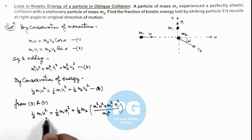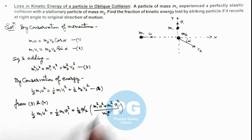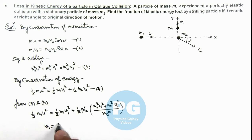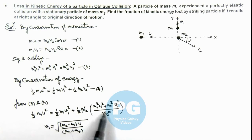On simplifying, m2 cancels out and we get the value of v1. The value of v1 we are getting is: v1 = sqrt((m2 - m1)/(m1 + m2)) * u. I'm leaving it for you to simplify this expression and get the value of v1.